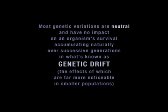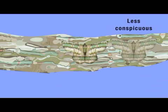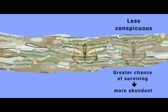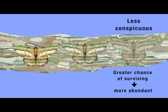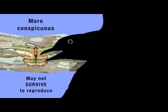But a variation in colour, for example, could have a major impact. Take this insect. If genetic variation makes some of its offspring less conspicuous to predators, they'll have a greater chance of surviving and reproducing, and in the course of time, the insects with this variation may become more abundant within the population. If the variation makes other offspring more conspicuous to predators, they may not survive to reproduce, and the variation may vanish or become suppressed because of natural selection.